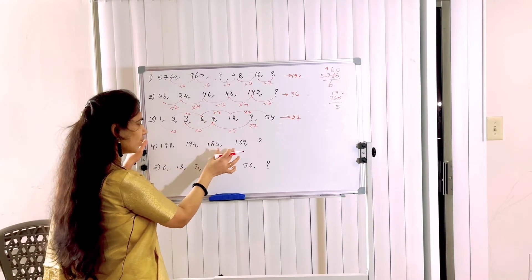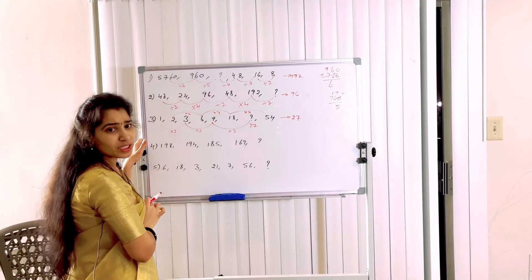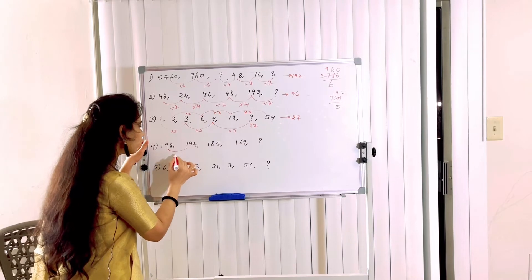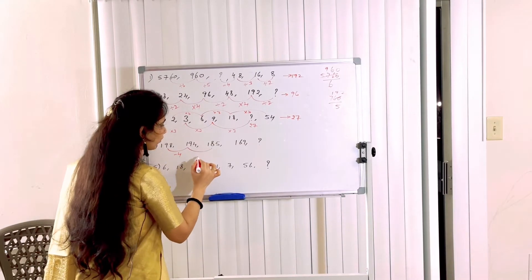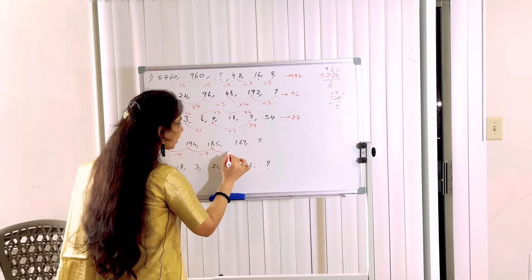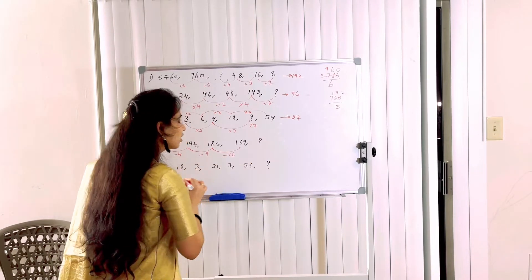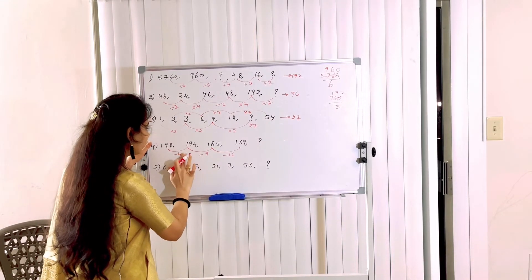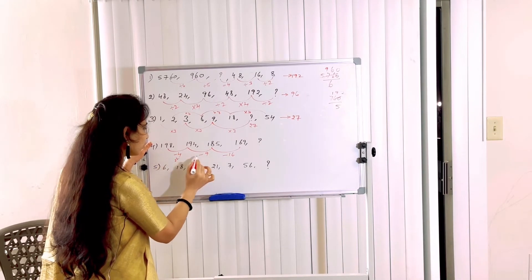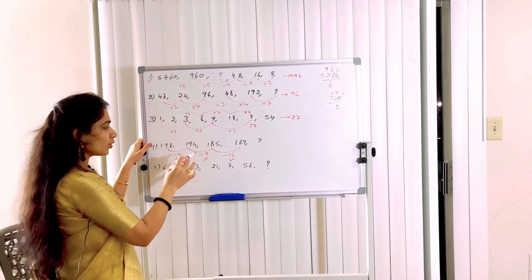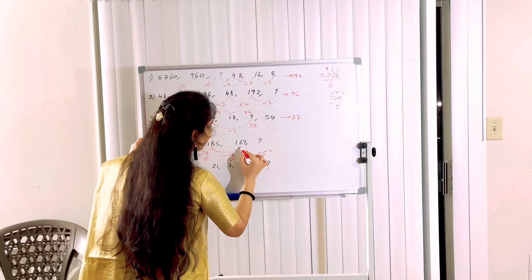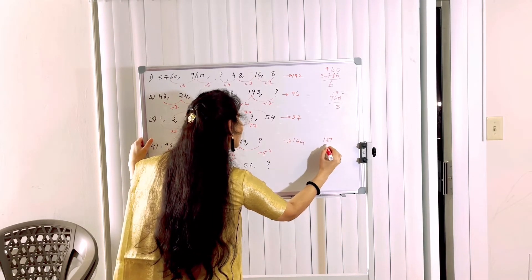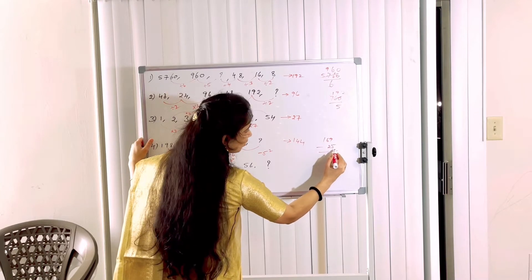Next problem: 198, 194, 185, 169, [missing]. This is an addition/subtraction pattern — numbers are decreasing. 198 minus 194 = 4; 194 minus 185 = 9; 185 minus 169 = 16. The differences are 4, 9, 16 — perfect squares: 2², 3², 4². Next difference is 5² = 25. So 169 minus 25 = 144. Answer is 144.